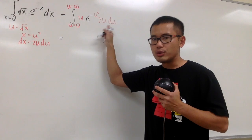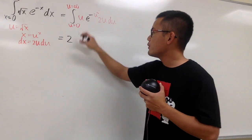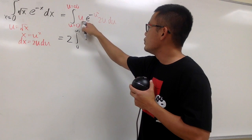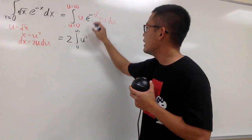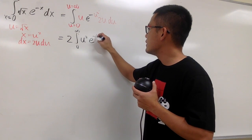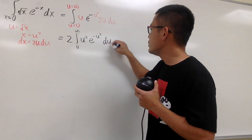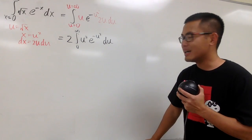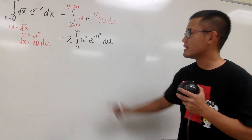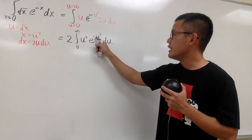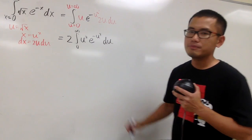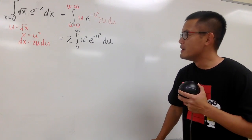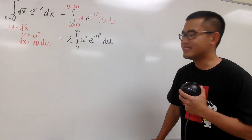Taking the 2 all the way to the front, we have 2 times the integral from 0 to infinity of u times u — which is u squared — times e to the negative u squared du. Now, how can we integrate u squared times e to the negative u squared? We can't directly.